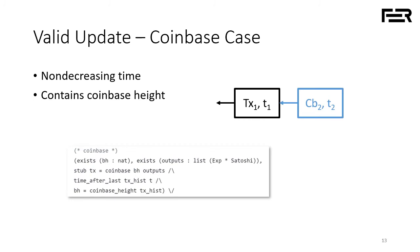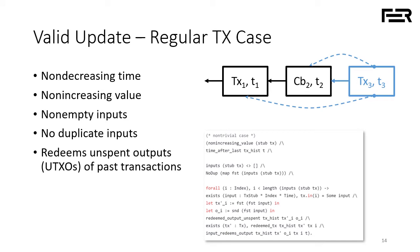To define valid updates to transaction history, we consider two cases. If the transaction is a coinbase transaction, we require that the time is non-decreasing and that the transaction contains the proper coinbase height — one greater than the total number of coinbase transactions currently in the history. For a regular transaction, we again require non-decreasing time, but also check that the value is non-increasing (sum of output values ≤ sum of input values), the input list is non-empty, there are no duplicate inputs, and every input redeems some previously unspent output.